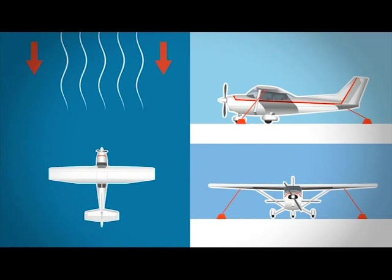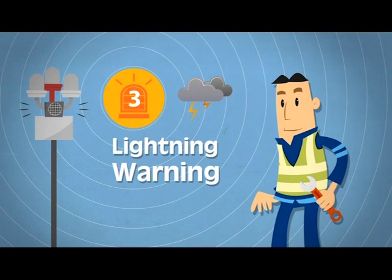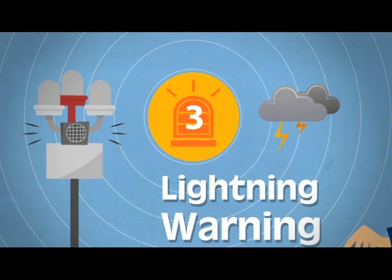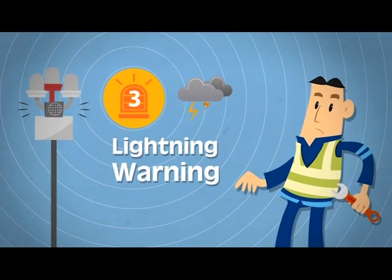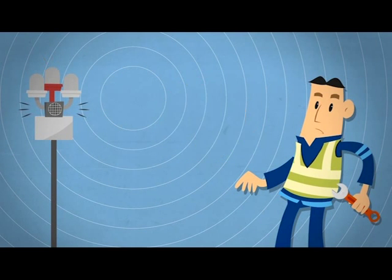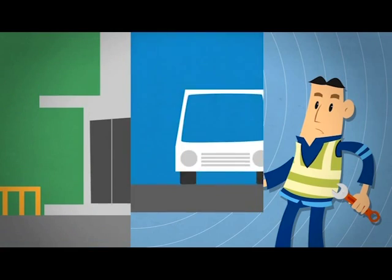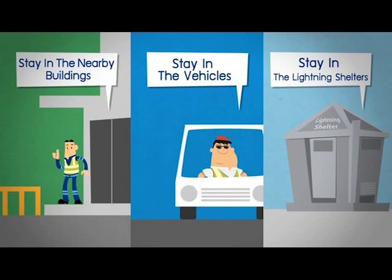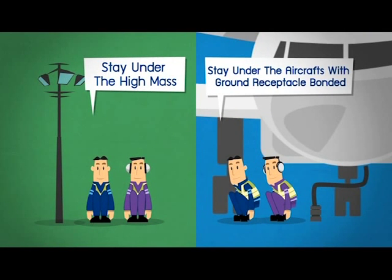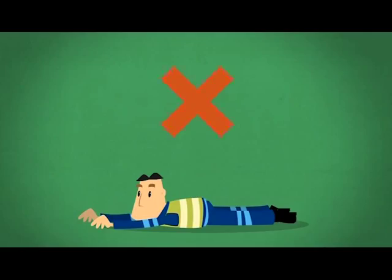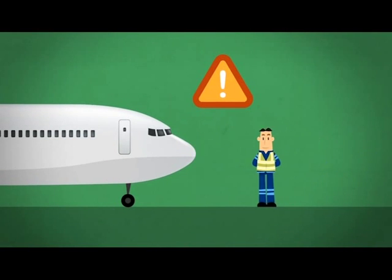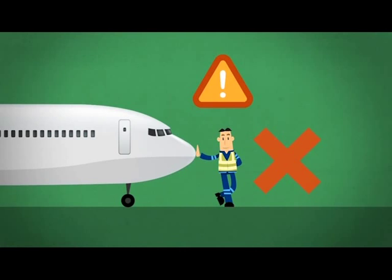For the light aircraft, it would be parked and tied down. Upon receiving notification level 3 — lightning warning — the flashing red light and siren will be turned on. Let everyone temporarily stop operations and take cover from the lightning immediately. You can stay in the nearby building, vehicle, lightning shelters, high base, and under aircrafts with ground receptacle bond. Do not lie down on the floor. Sit with knees up and feet together.